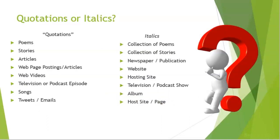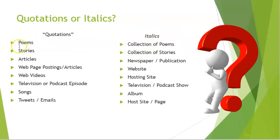Something that can be tricky is knowing when to put a title in quotes and when to put it in italics. Here's a list of titles that go in quotation marks versus titles that are put in italics. One way to think about this is that italics are for things that house the things in quotes. For example, a collection of poems is the house where poems live — so the collection is italicized and the poems are in quotation marks. Same thing with an album: the album is the house where songs live, so the album is italicized and the songs are in quotes.